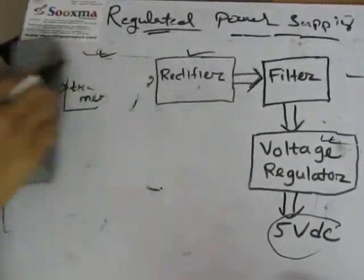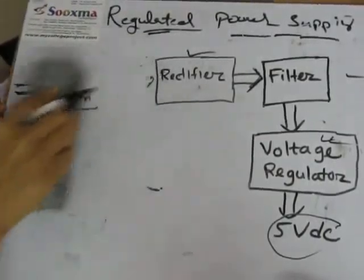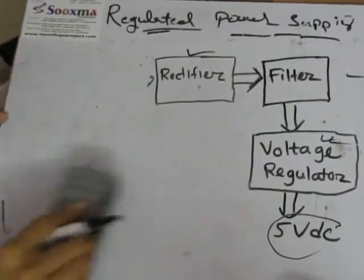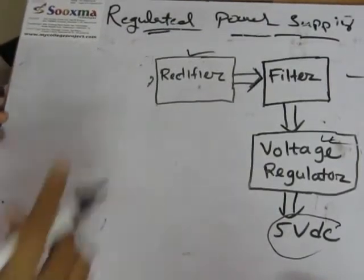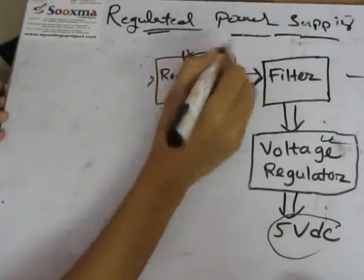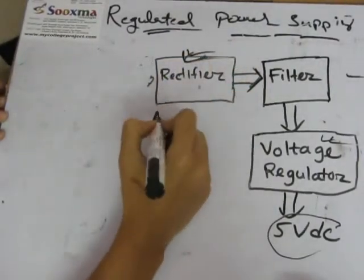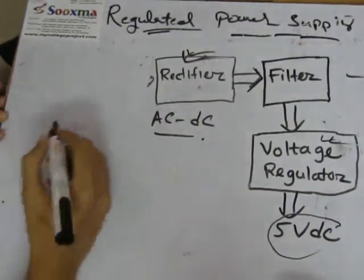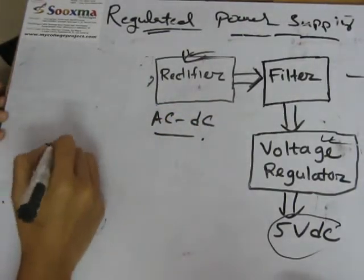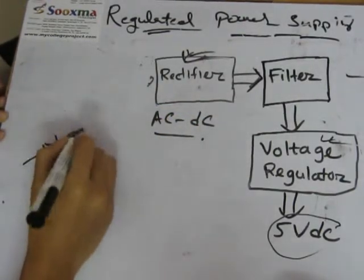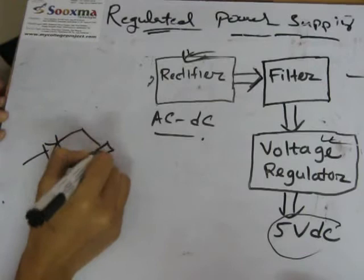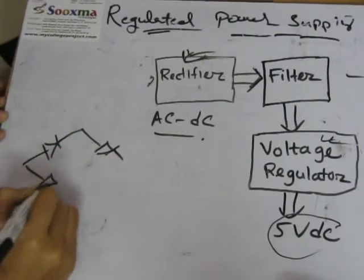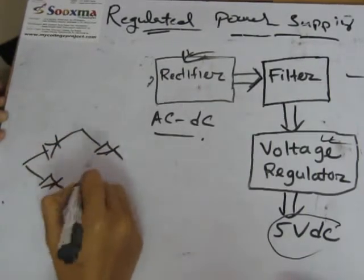Let's come to the rectifier part. A rectifier is a means to convert AC to DC. Here we are using a bridge rectifier, which consists of 4 diodes.